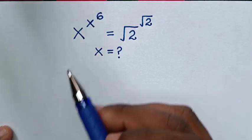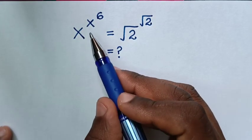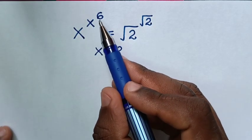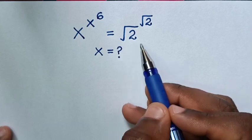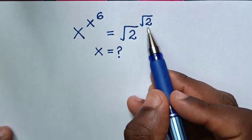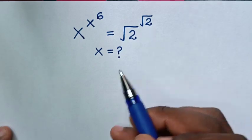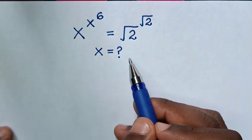Hello, how to solve x power of x power of 6 is equal to square root of 2 power of square root of 2, to find the value of x.